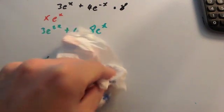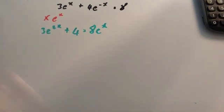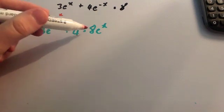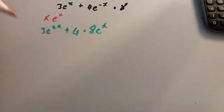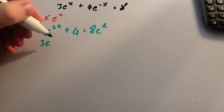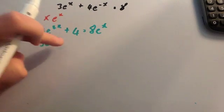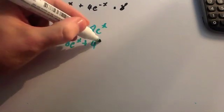Now, if you look at this, you've got 3e to the 2x plus 4 equals 8e to the x. I'm going to bring everything over to one side, which gives you 3e to the 2x minus 8e to the x plus 4 equals 0.